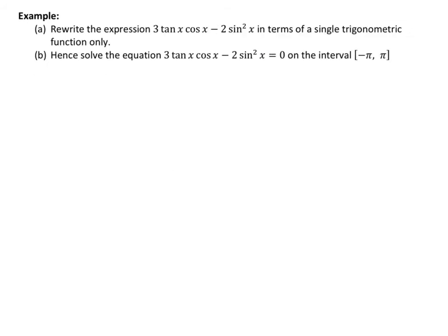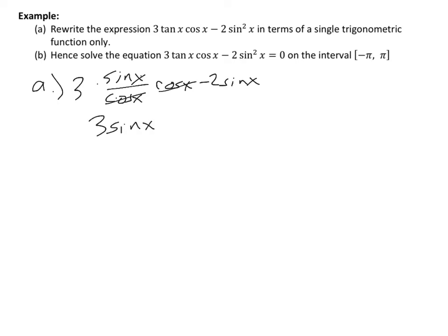One of our key tactics is using trig identities when an equation has multiple different trig functions. In this example from our earlier warm-up, if I replace tangent x with sine x over cosine x, even leaving everything else alone, the cosine x's cancel out and I'm left with 3 sine x minus 2 sine² x. The question said to rewrite in terms of a single trigonometric function, and that's done.